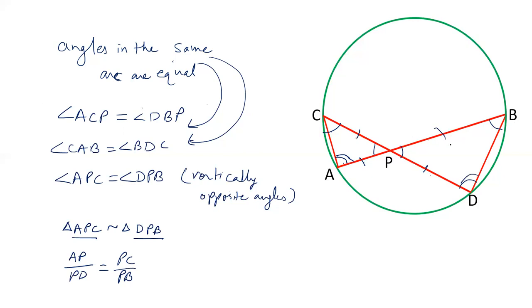Now, we have to just multiply it cross. AP × PB = PC × PD.